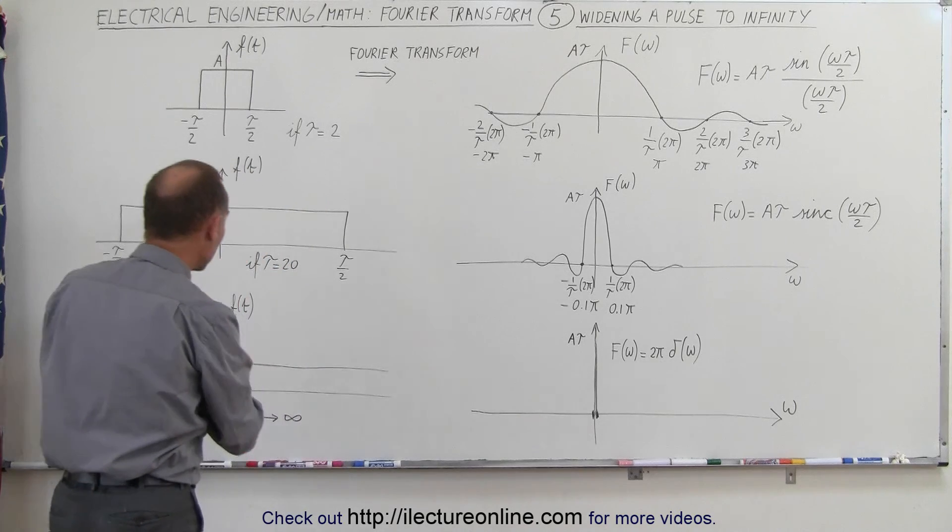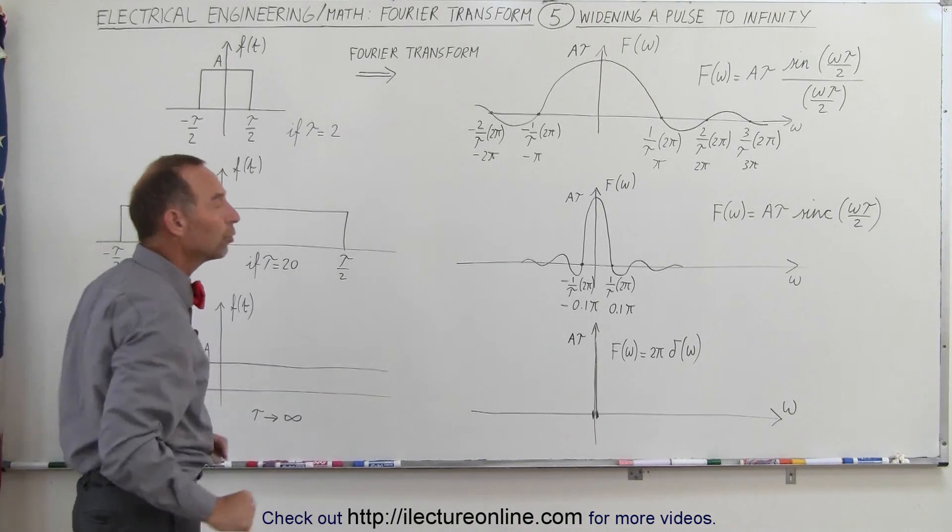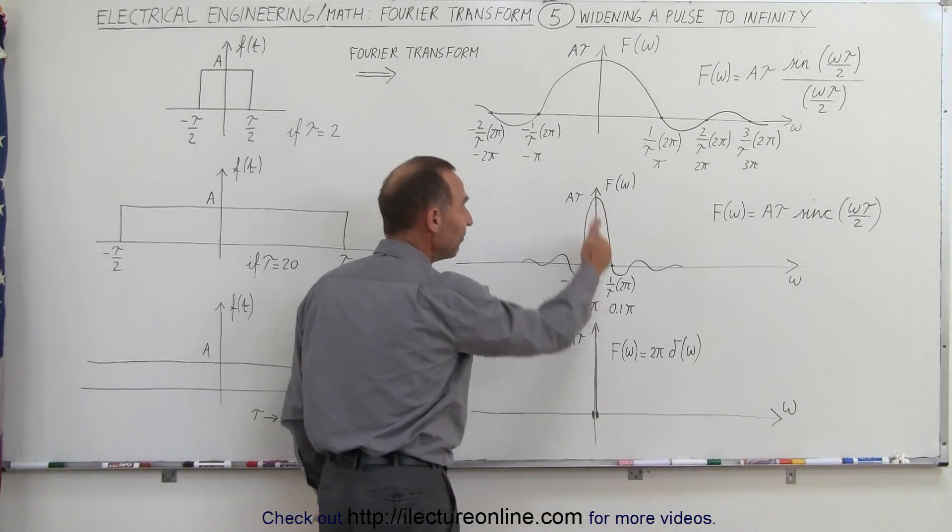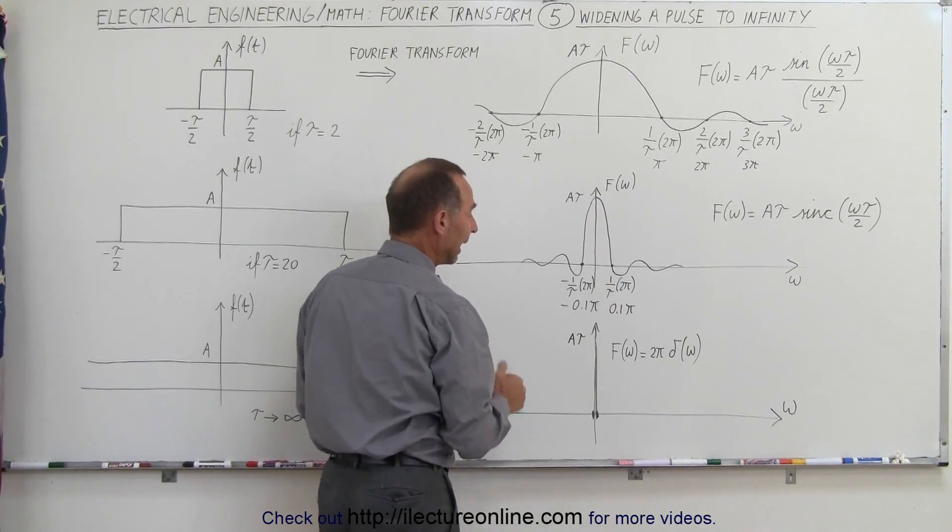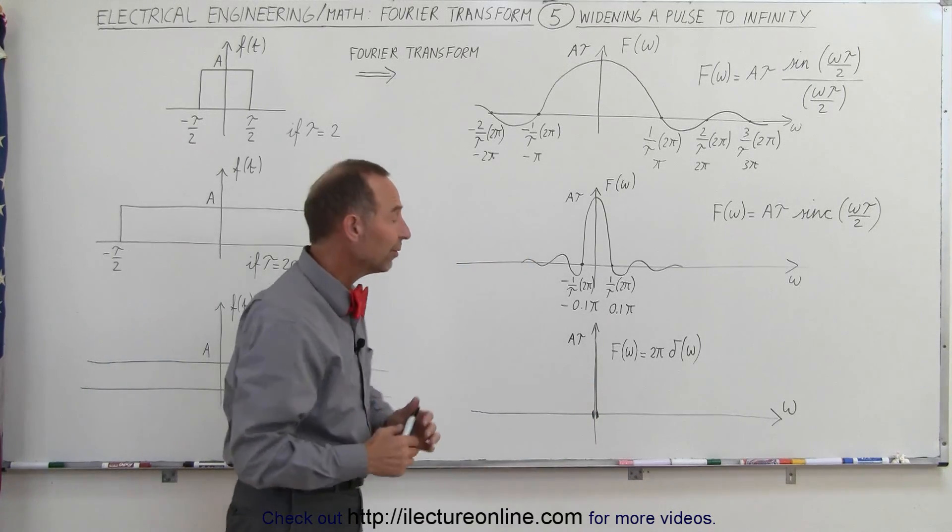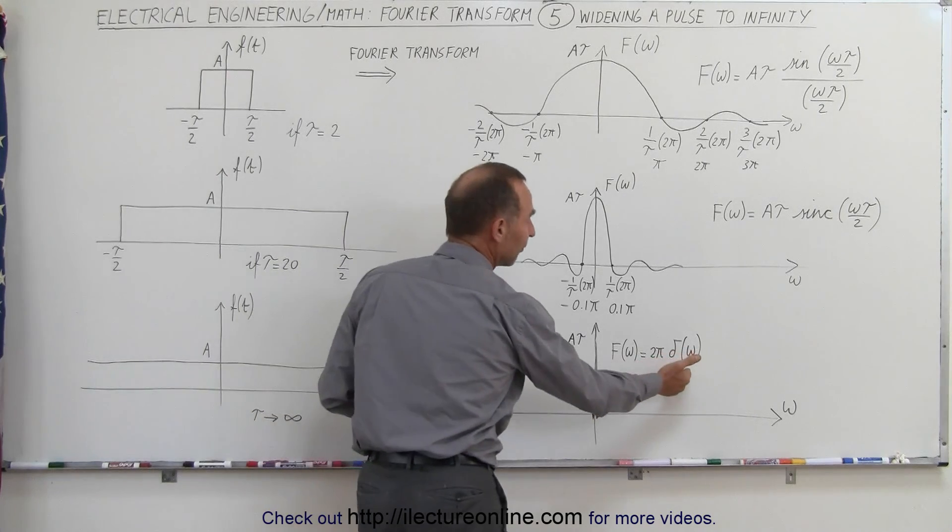What happens when we continue to increase the pulse width to make it infinite in both directions? That would cause the amplitude to become infinite in the vertical axis, and the width will become 0 in the horizontal frequency axis. It turns out that this becomes the delta function.